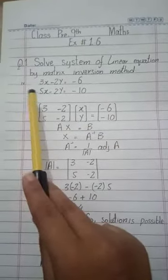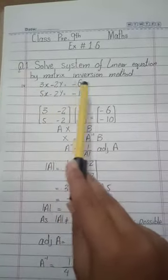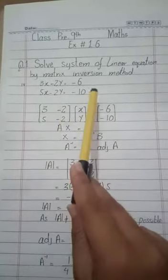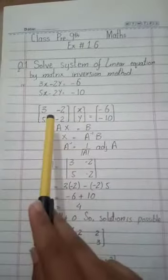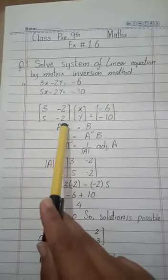This is the same as we did in last video lectures. The equations are 3x minus 2y equals minus 6, and 5x minus 2y equals minus 10. First of all, separate variables: 3, minus 2, 5, minus 2 are the coefficients of x and y.